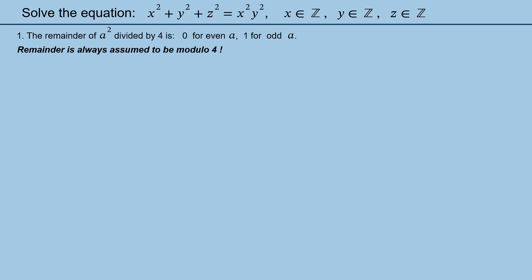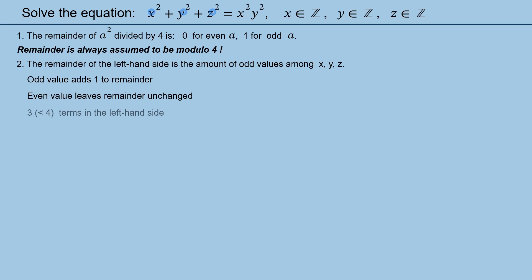The second statement of the video is the following. The remainder of the left-hand side is the amount of odd values among x, y, and z. For example if x, y, and z are all even the remainder of the left-hand side is 0. In case one value out of x, y, and z is odd the remainder is 1. Whereas if x, y, and z are all odd the remainder of the left-hand side is 3. To prove the statement we just observe that according to statement 1 each odd value adds 1 to the remainder while each even value leaves the remainder unchanged. And the last thing to point out is that there are only three terms in the left-hand side. Therefore the remainder value will never reach 4 so it cannot roll back to zero.